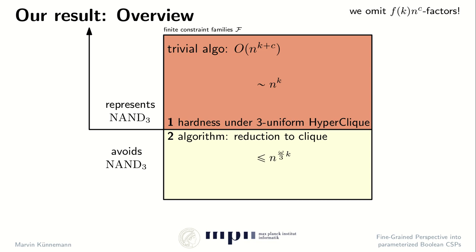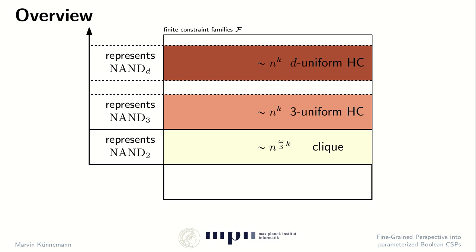Now we have seen this tight dividing line. All of these arguments generalize to the following kind of layering: the complexity of a NAND-representing constraint family is tightly described by a corresponding d-uniform hyperclique problem, where the arity of the hyperedges corresponds to the largest arity of the NAND constraints that can be expressed. What remains is to classify the bottom layer of constraint families that avoid the binary NAND constraint.